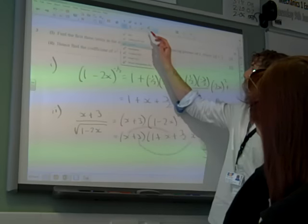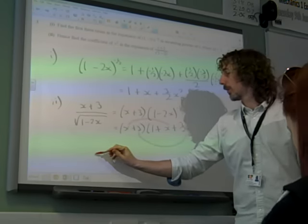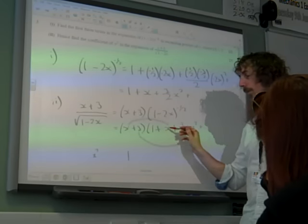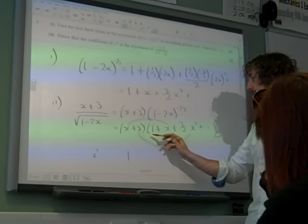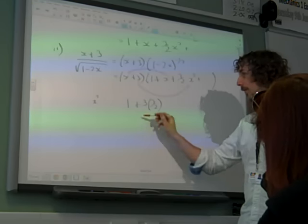So that gives us, all together, we've got a 1 from that bit, and we've got 3 × 3/2 from that bit,